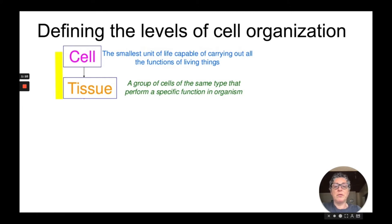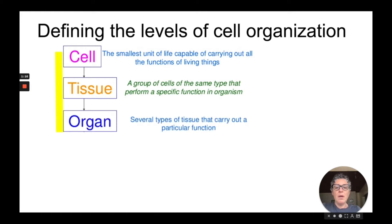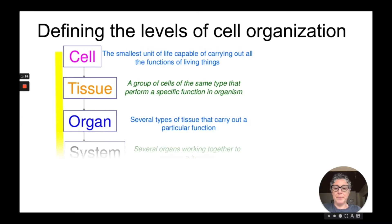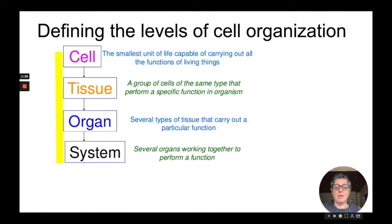Tissues perform a specific function in an organism, and we'll look at some examples in a little bit. When you have several different types of tissue grouped together that carry out a particular function for an organism, then you have an organ. When you have groups of organs that work together to perform a specific function, then you have an organ system.